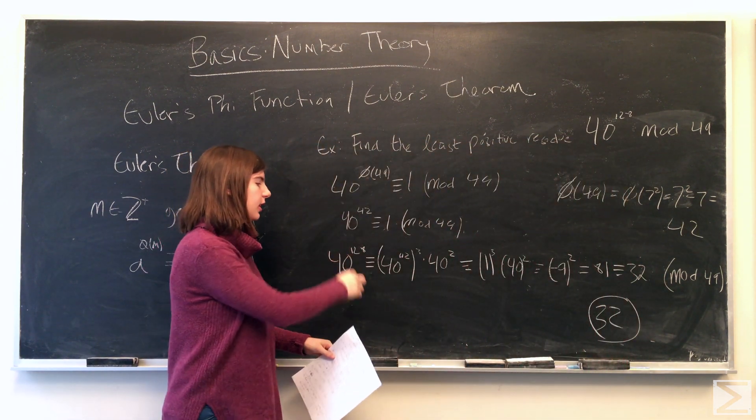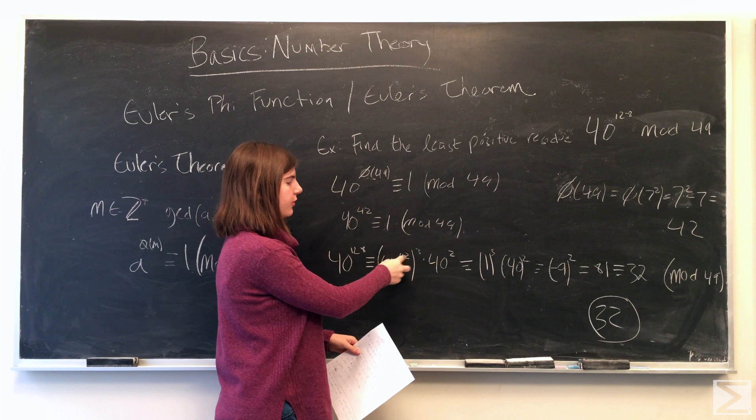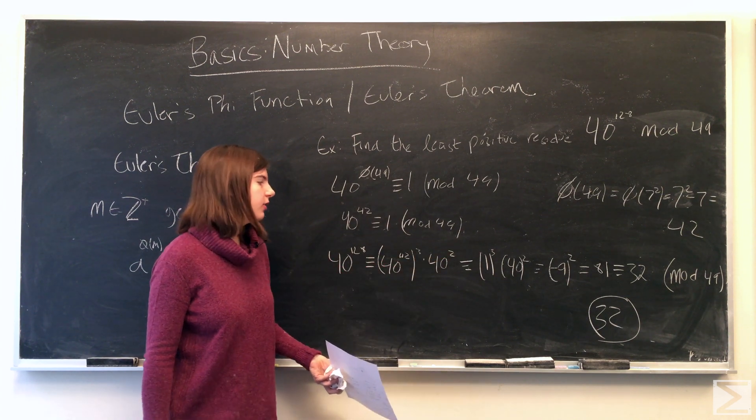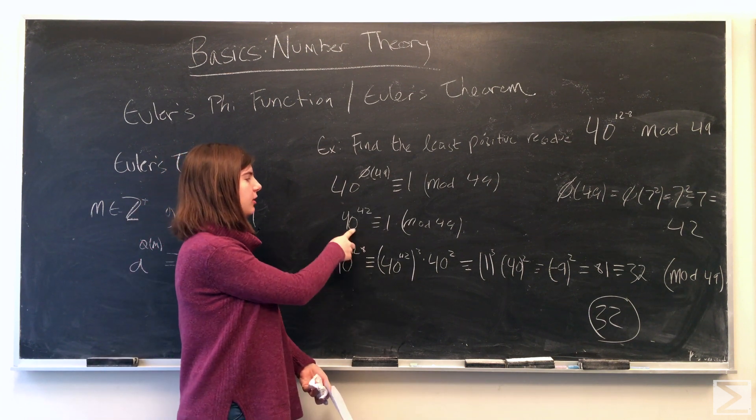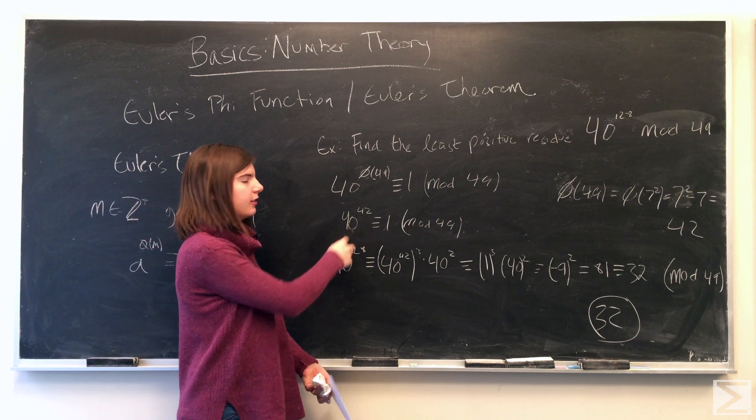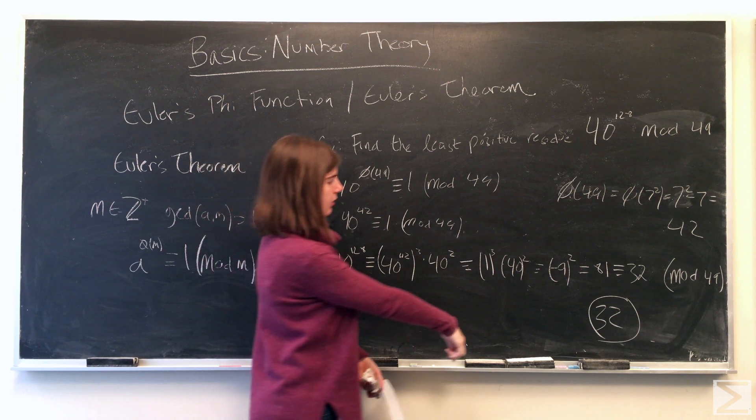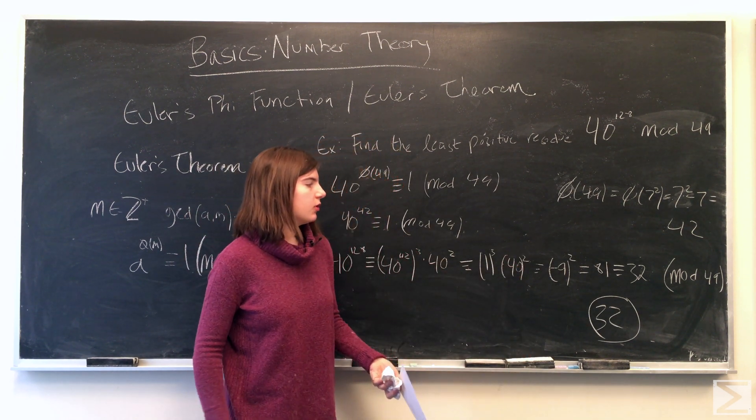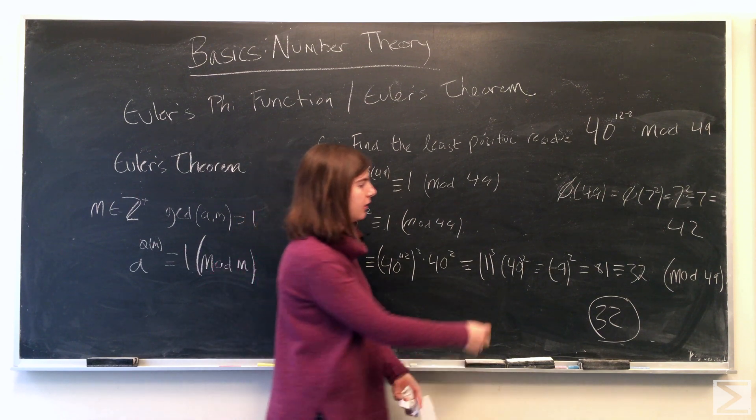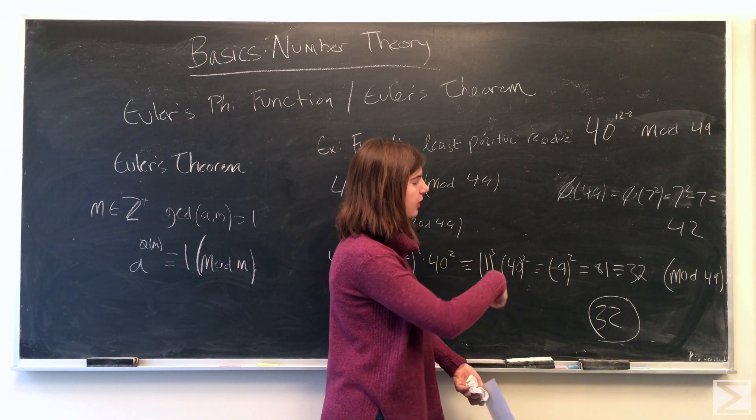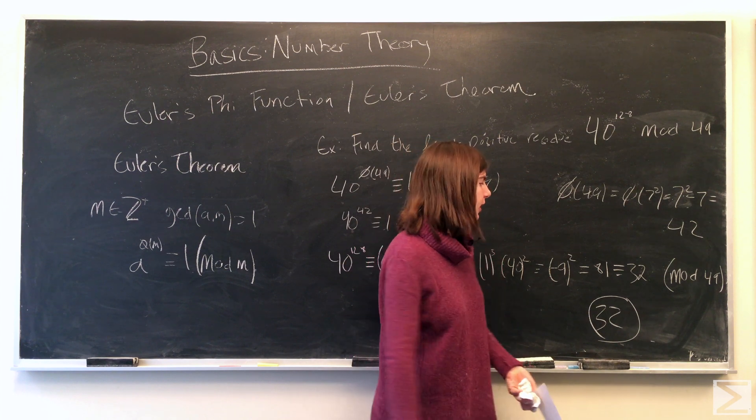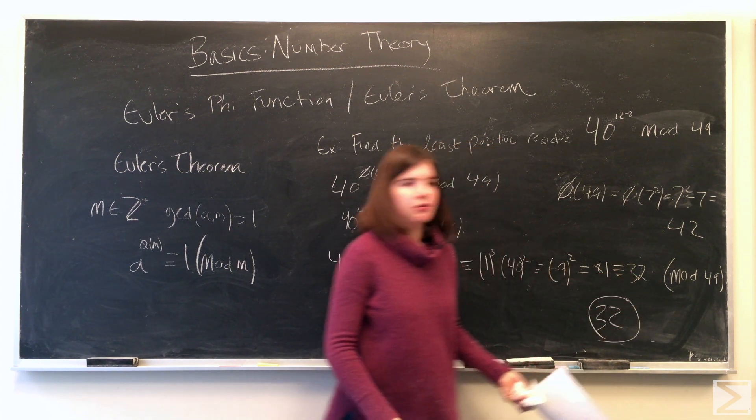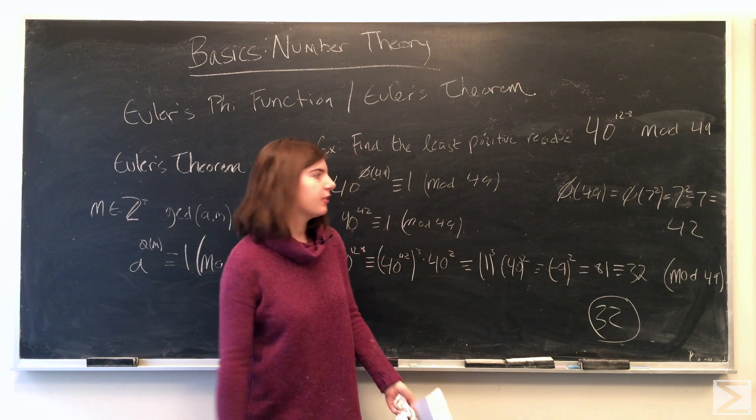We'll just rewrite 128 as 42 times 3 plus 2, so we'll have 40 to the 42nd to the third power times 40 to the second, and we know that 40 to the 42nd is congruent to 1. So we're left with 40 to the second. 40 is congruent to negative 9 modulo 49, and then negative 9 squared is 81, and when 81 is divided by 49, we're left with a remainder of 32, and we can't reduce that anymore, so 32 is our final answer.